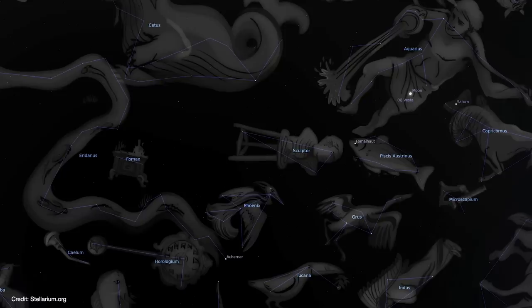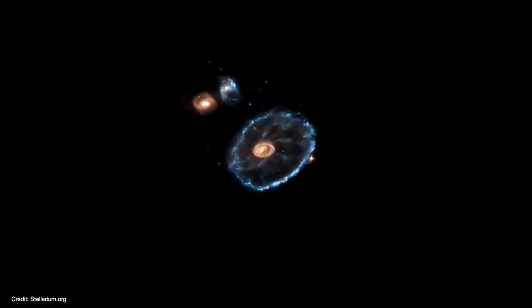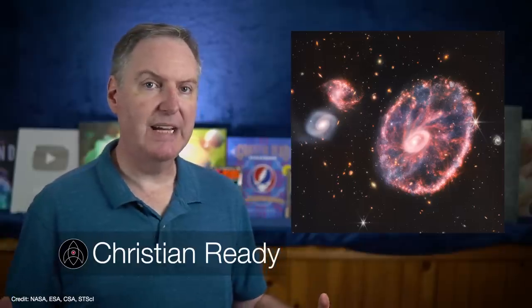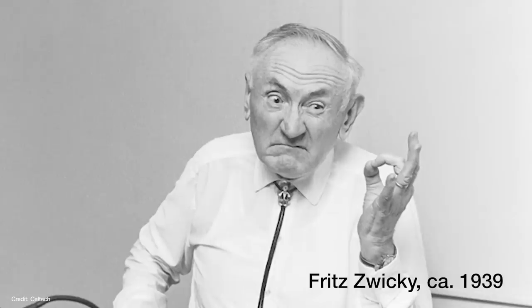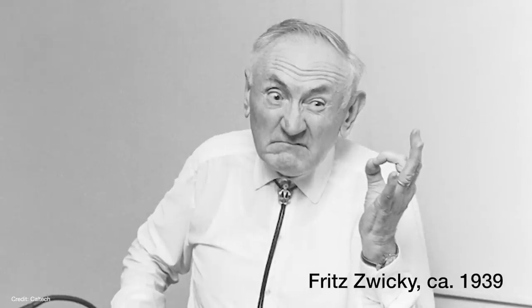The Cartwheel is located about 440 million light-years away in the constellation Sculptor. It's about 150,000 light-years in diameter, so a little bit larger than the Milky Way. It was discovered by Fritz Zwicky back in 1941.